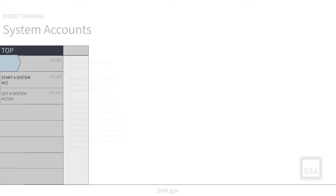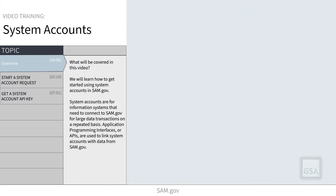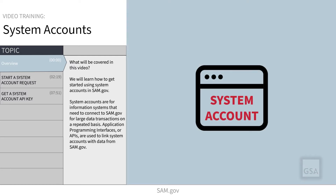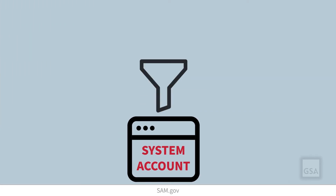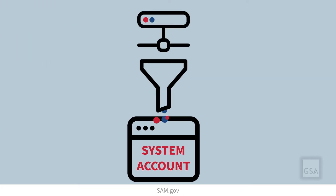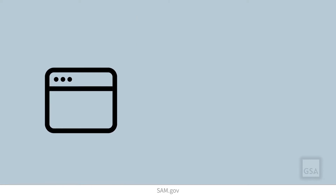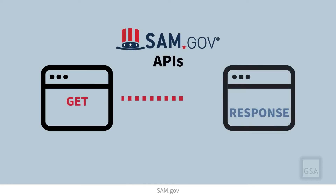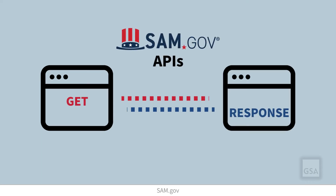In this video, we will learn how to get started using system accounts in SAM.gov. System accounts are for information systems that need to connect to SAM.gov for large data transactions on a repeated basis. Application Programming Interfaces are used to link system accounts with data from SAM.gov.